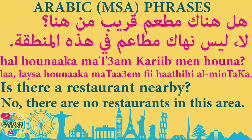مطعم means 'restaurant' or 'a restaurant'. We don't have the article 'a' in Arabic — it's like in English saying 'is there restaurant' instead of 'is there a restaurant'. قريب means 'close to'. قريب من هنا literally means 'close from here', which means 'close to here' or 'nearby'.